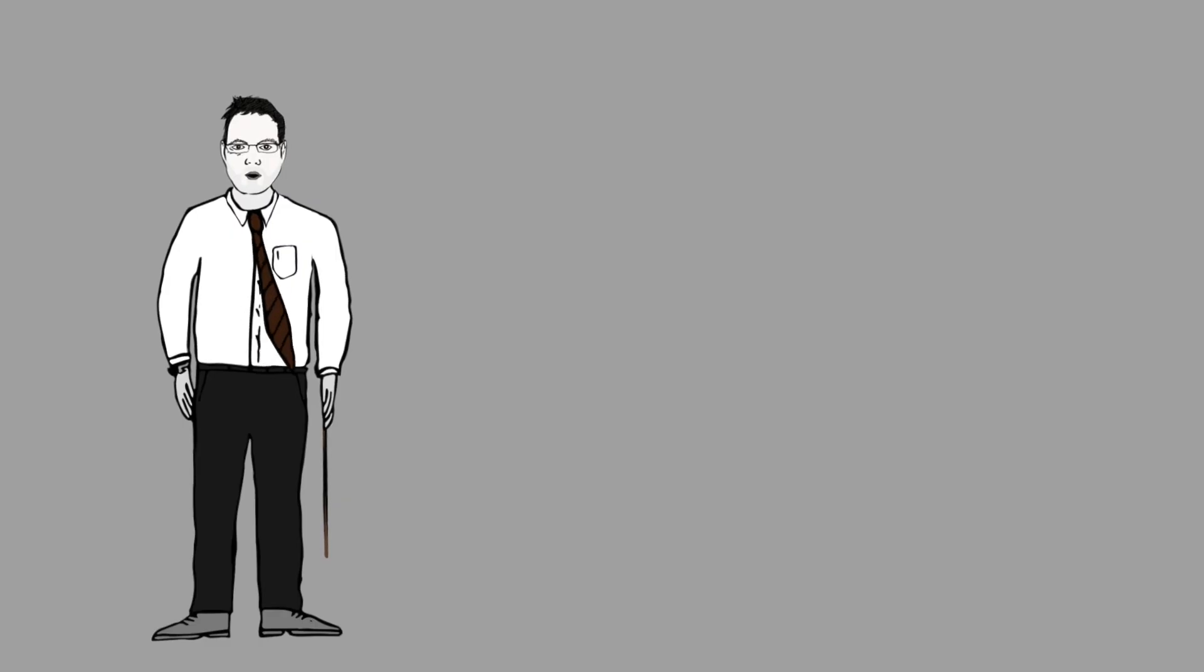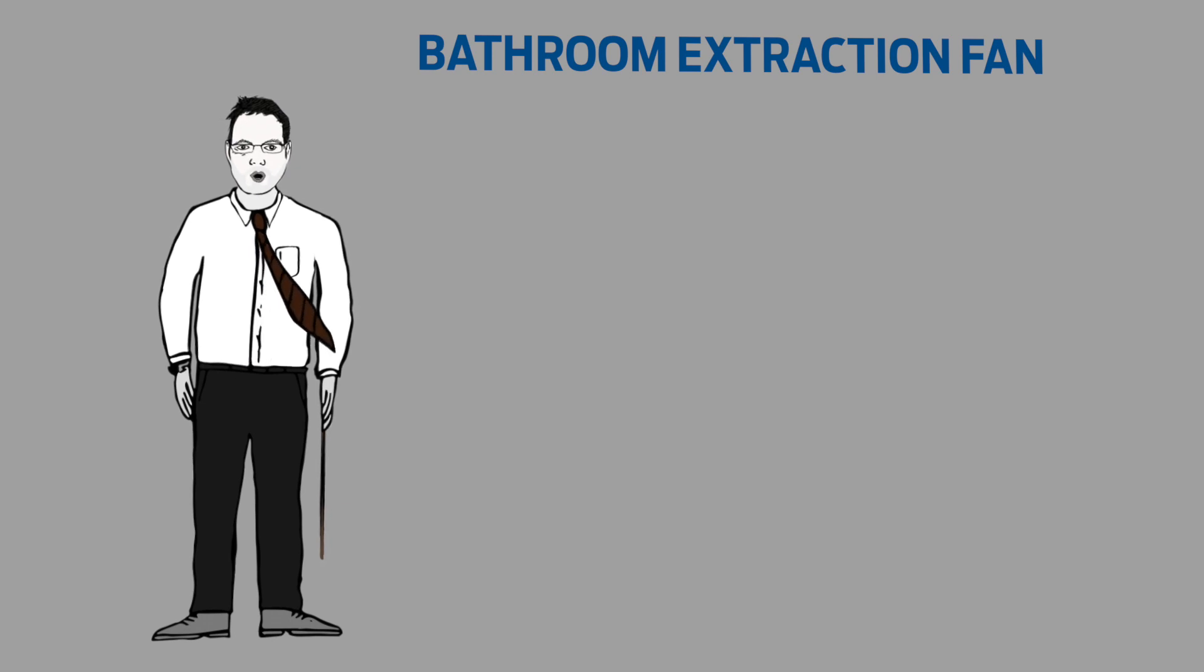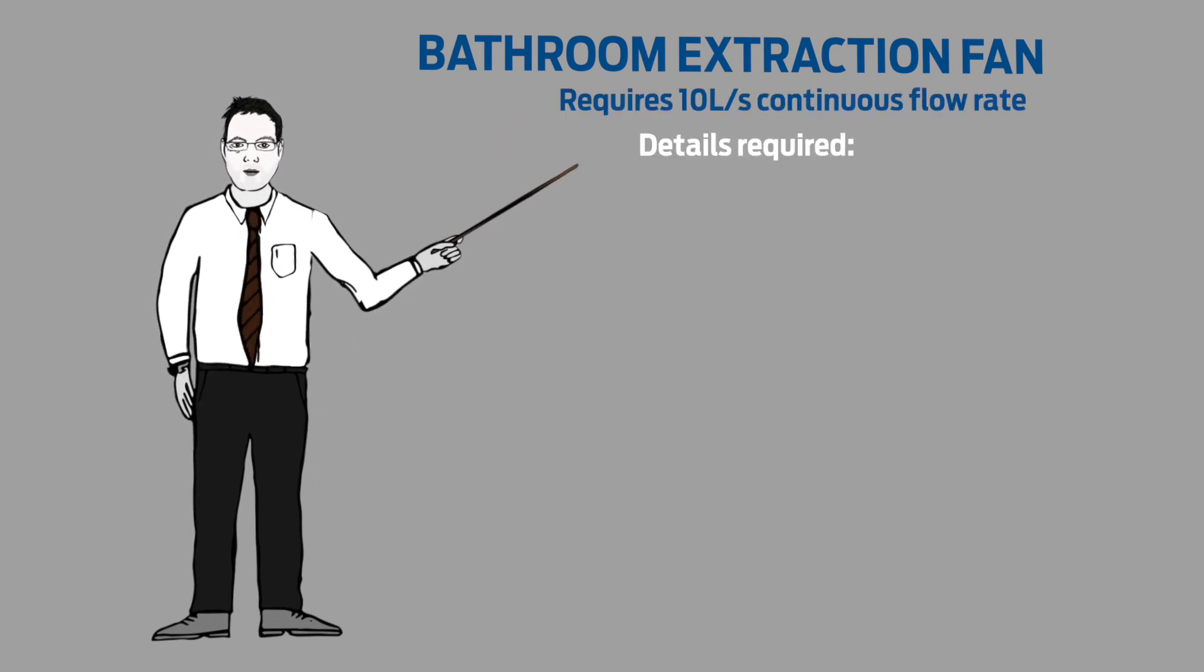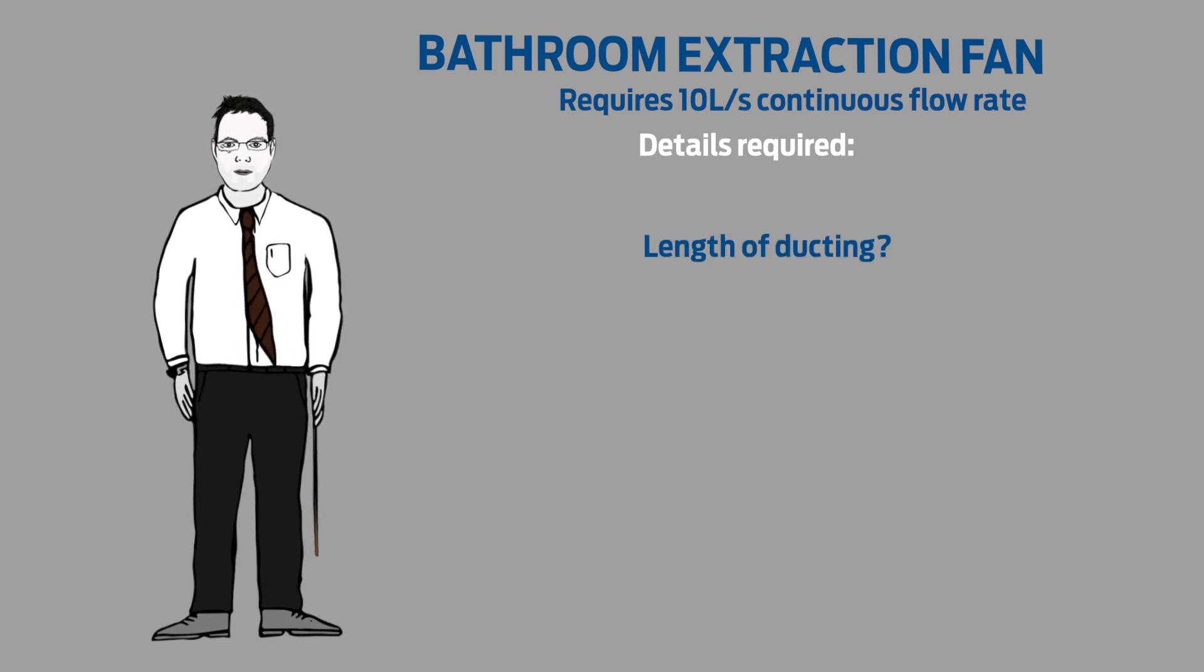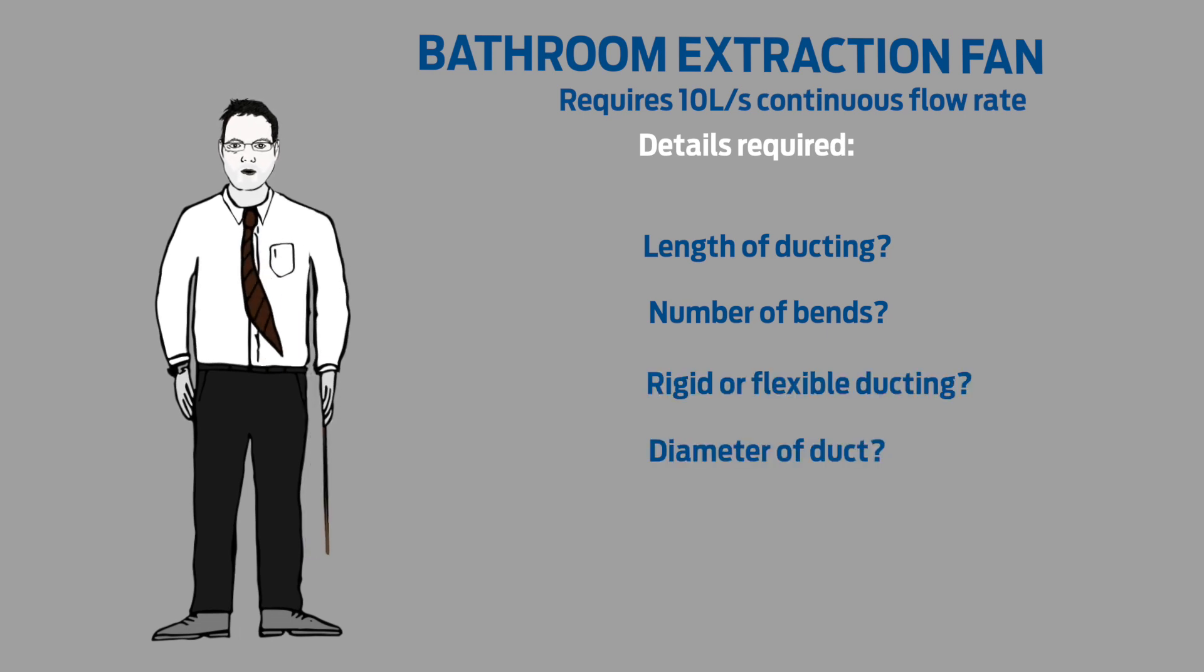Let's look at a worked example for a bathroom extraction fan. The standard lists 10 litres per second continuous flow rate for this case regardless of room size. In order to work this out we will need a few details: the length of any ducting required and the number of bends, and also whether we are using rigid or flexible duct and the diameter.